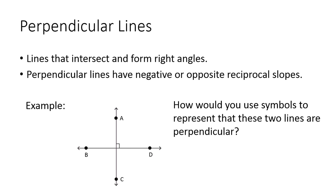So how would you use symbols to represent that these two lines are perpendicular? So these are lines, so they will have arrows when you are naming them. And the sign for perpendicular is an upside down T. So an example of how you would write this would be line A, C. I could have also said C, A.